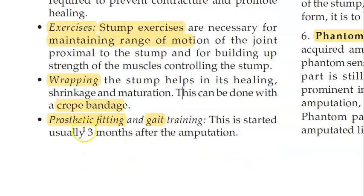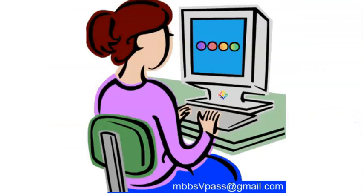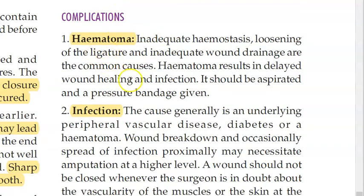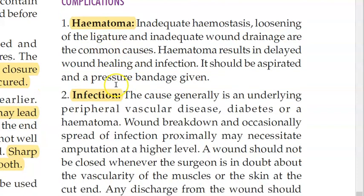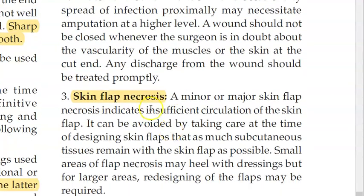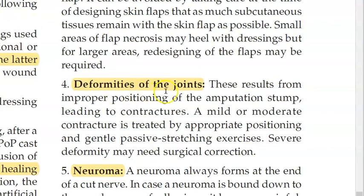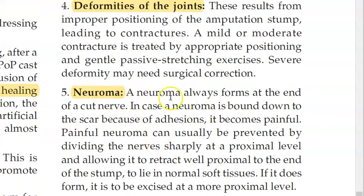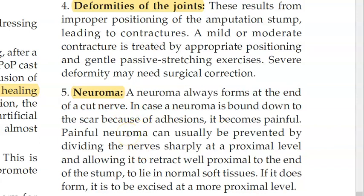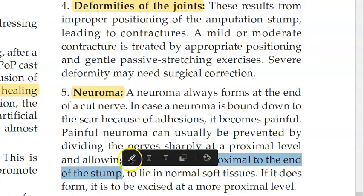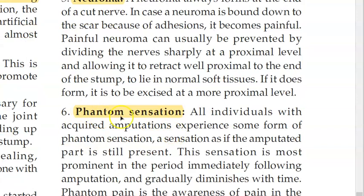Once the prosthesis is fitted, gait training and full rehabilitation can begin. Complications to know include hemorrhage, hematoma, and infection. The skin flap used to cover the amputation surface can undergo necrosis. Deformities can occur. Neuroma always forms at the end of a cut nerve — that is why you pull, cut, and allow the nerve to retract proximally, so it sits well within the stump.